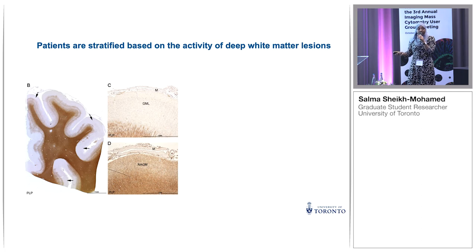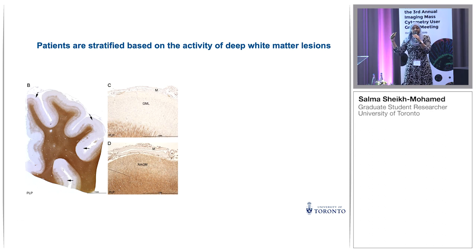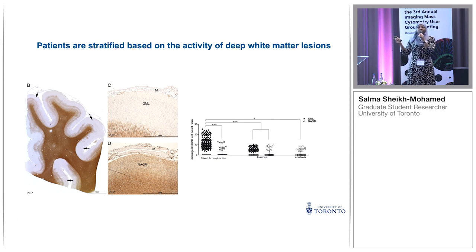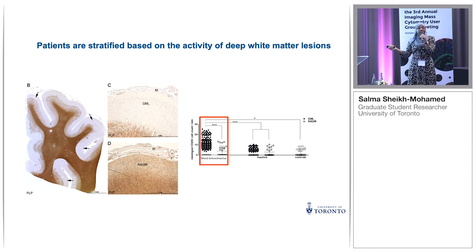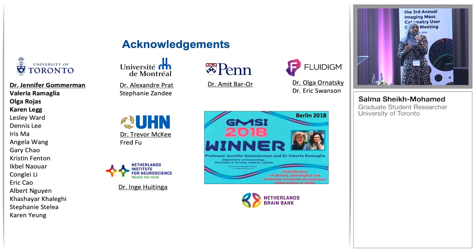Most importantly, we need a way to stratify our samples to identify only those patients with meningeal inflammation, because not all patients have it. Here is some unpublished data: we stained brain tissue for myelin, found areas of grey matter lesions and normal appearing grey matter, then quantified immune cells in the meninges adjacent to each area, stratified by white matter lesion activity. We found more immune cells in the meninges next to grey matter lesions, but only in patients with mixed active and active white matter lesions. This tells us that understanding white matter lesion activity can help predict which patients have meningeal inflammation — identifying the best samples for future IMC studies. A big thank you to Fluidigm for having us, and to everyone in the Gommerman lab.